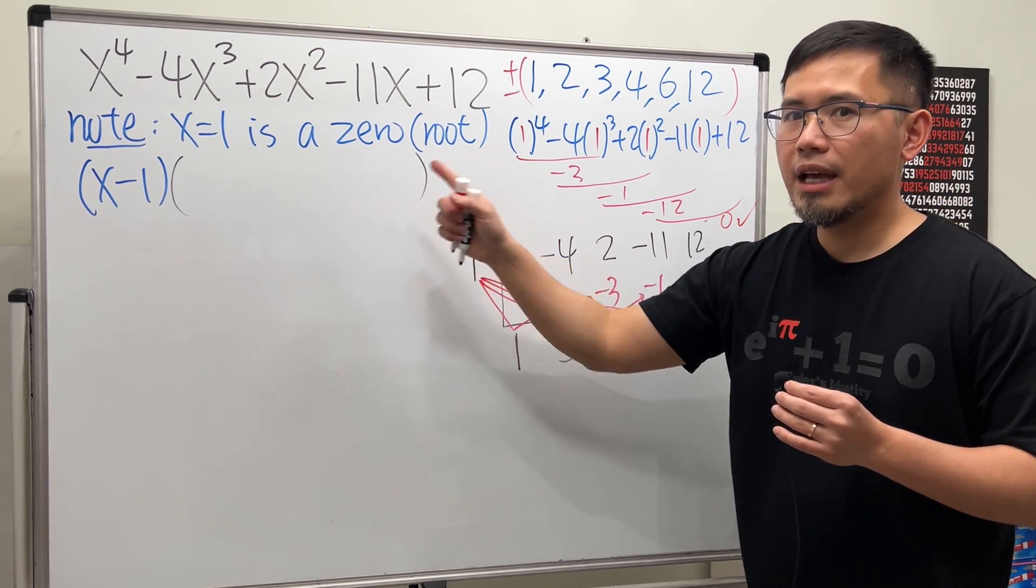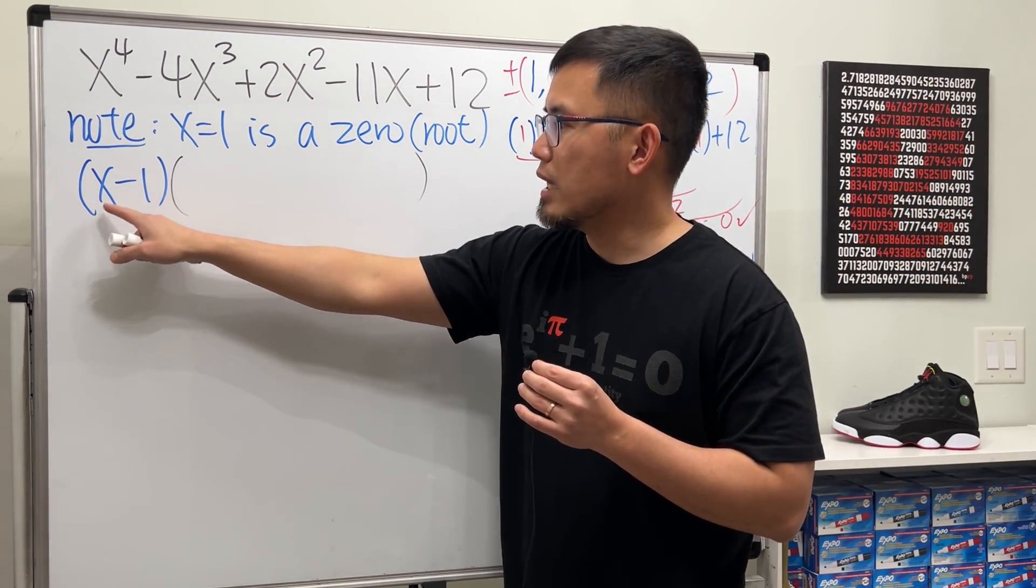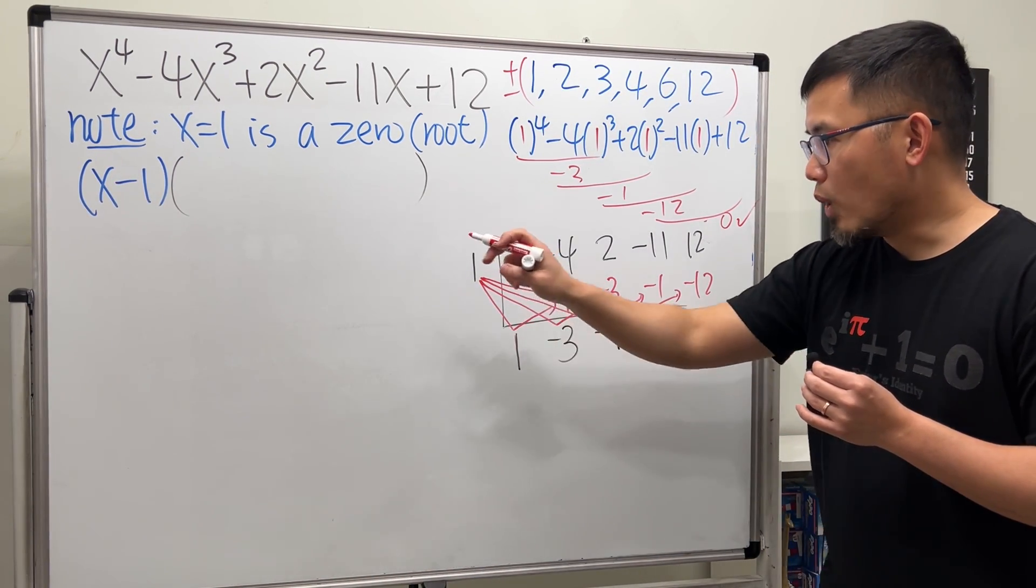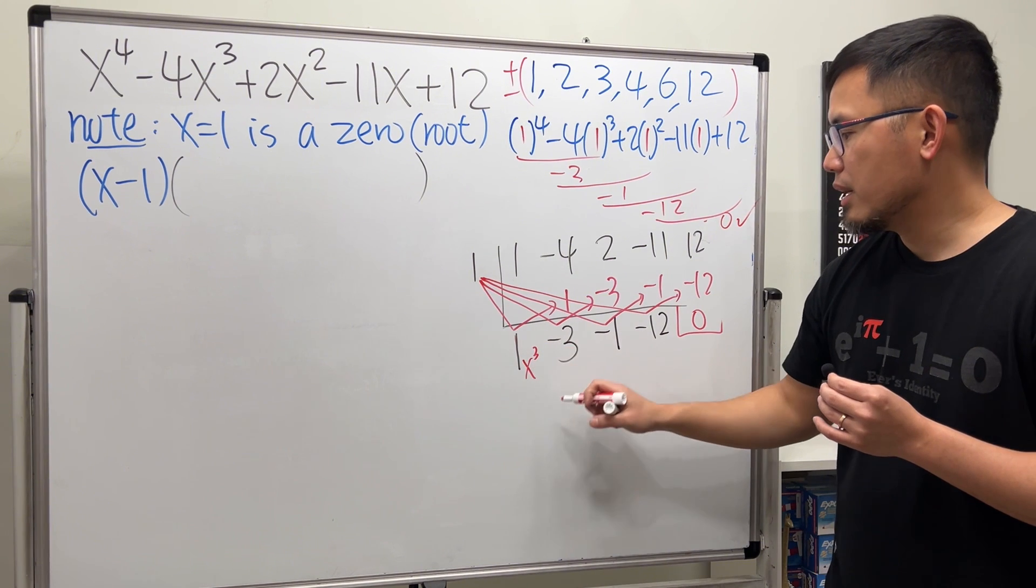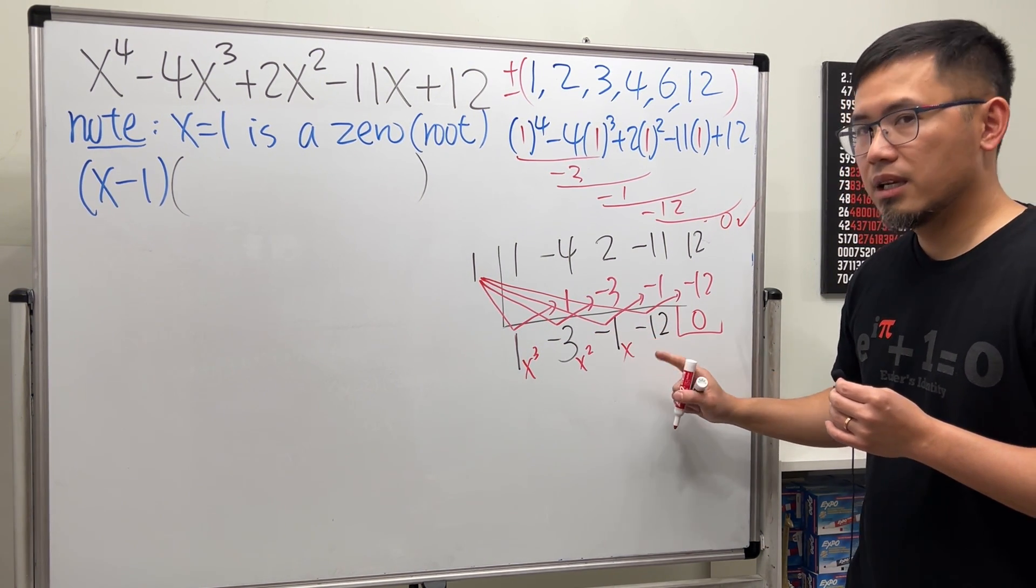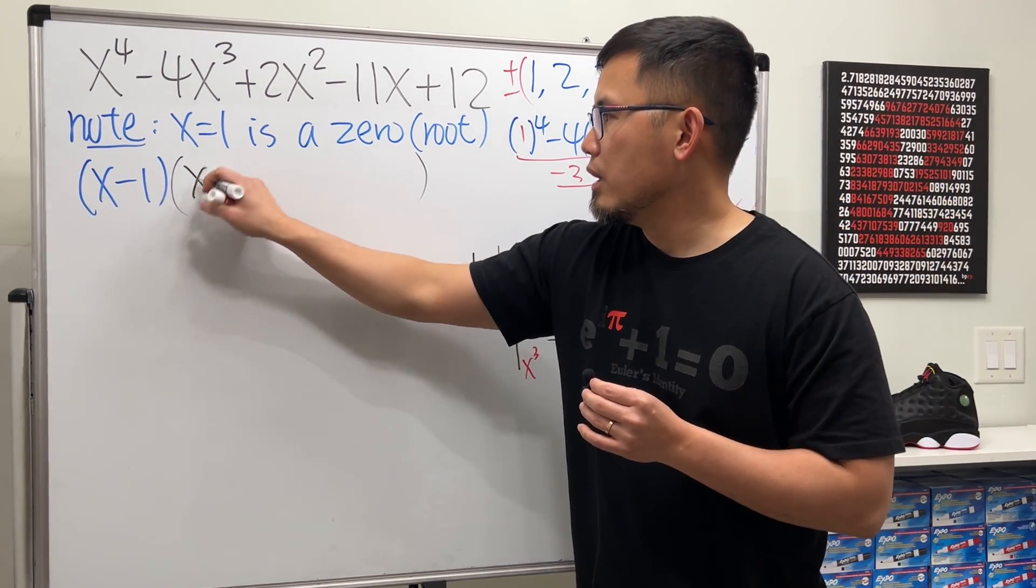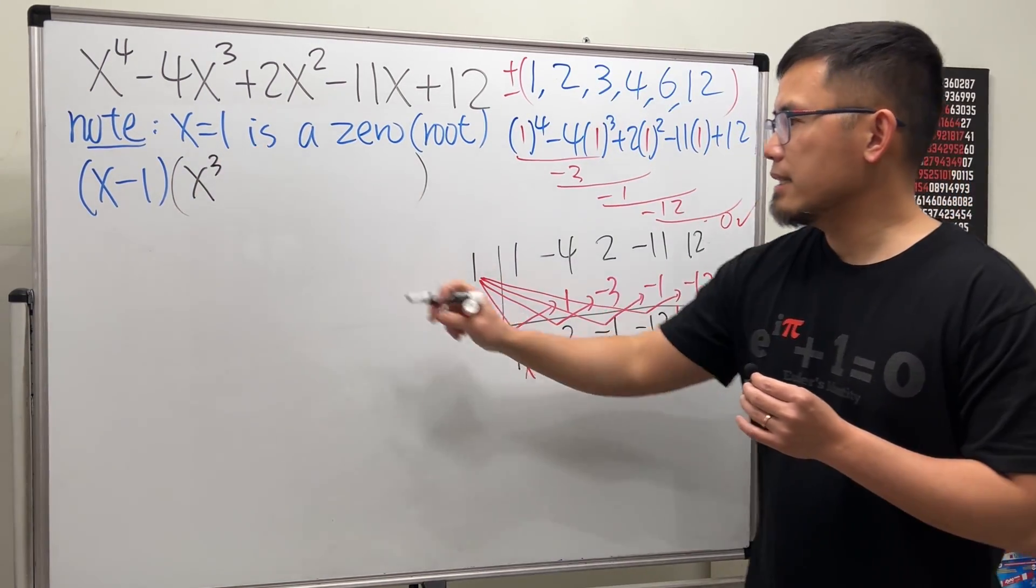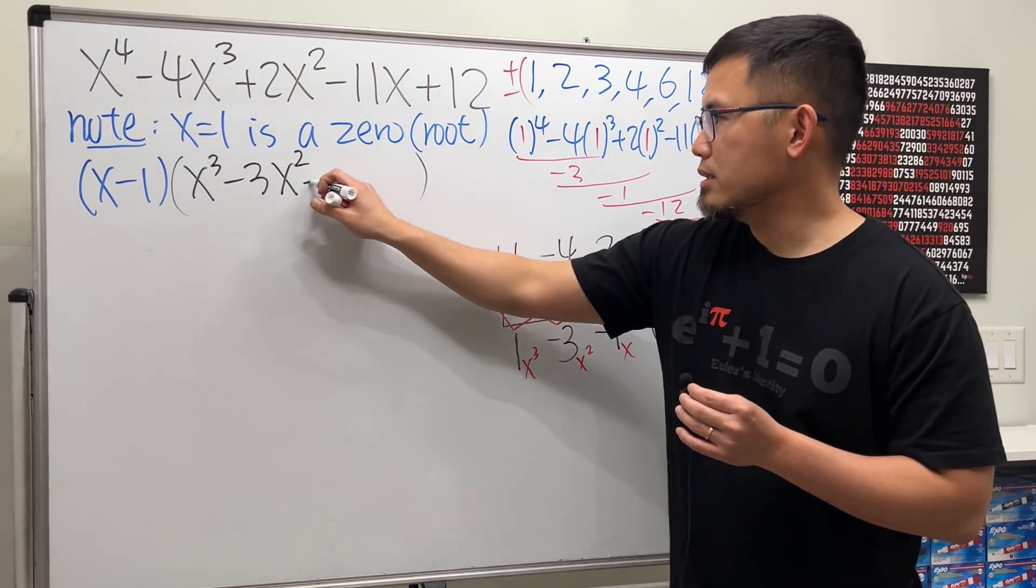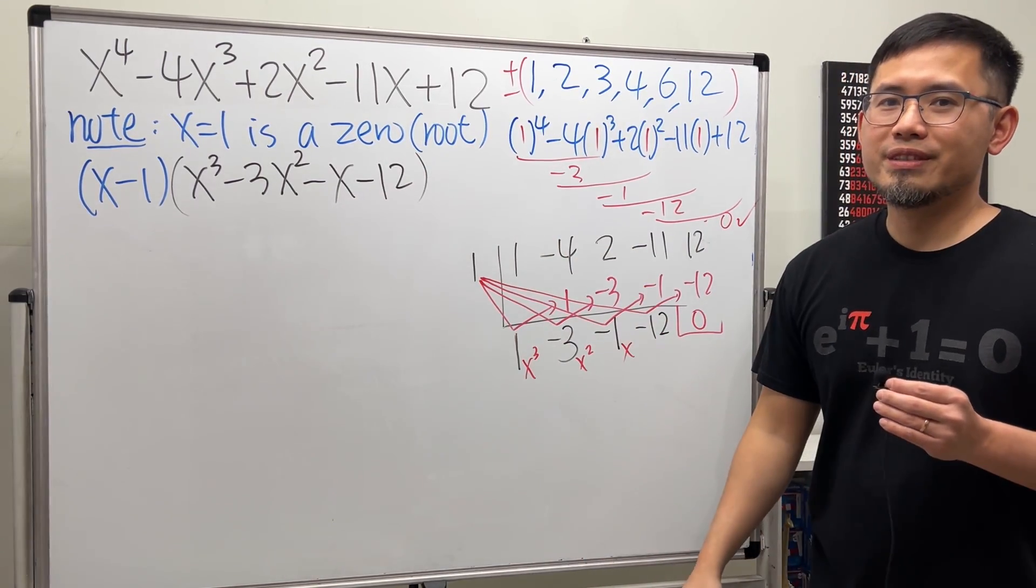If we have a zero, the final result here must be zero. This is the remainder, and then this right here will tell us the factor. These are the coefficients of our factor, and remember the power will go down by one because we factored out x to the first power. So this right here will be 1x to the third power, and then minus 3x squared, and then minus 1x, and then the constant term. So let's put that down: x to the third power minus 3x squared minus 1x minus 12. Cool, now what?